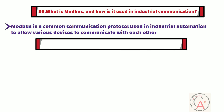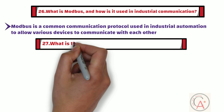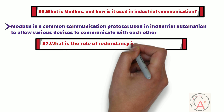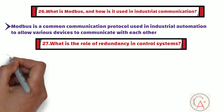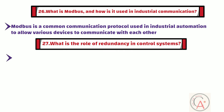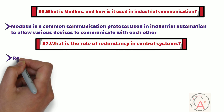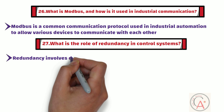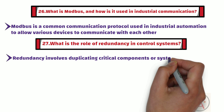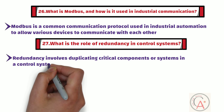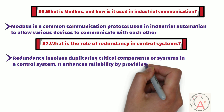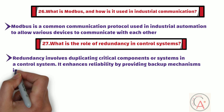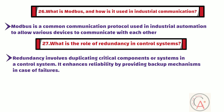The 27th question is: what is the role of redundancy in control systems and how does it improve reliability? Redundancy involves duplicating critical components or systems in a control system. It enhances reliability by providing backup mechanisms in case of failures.